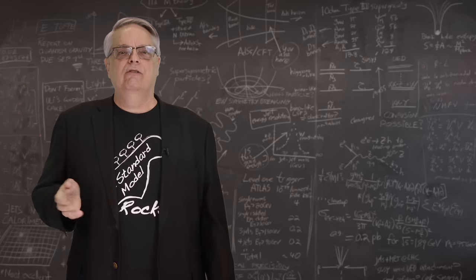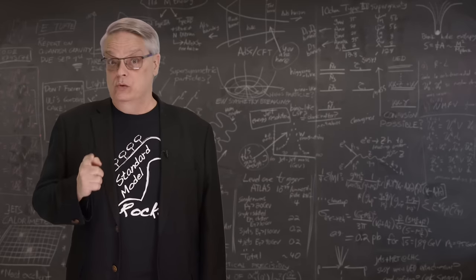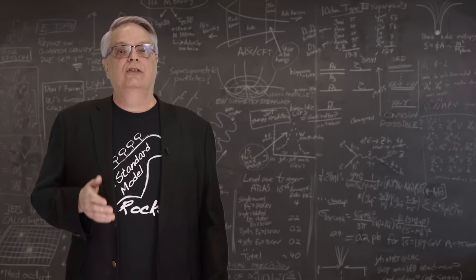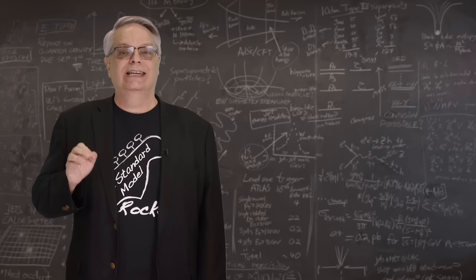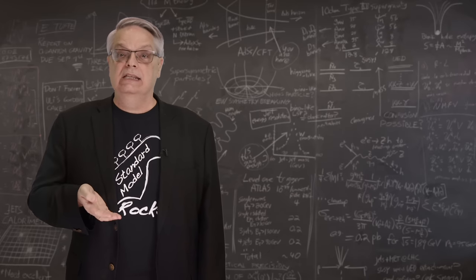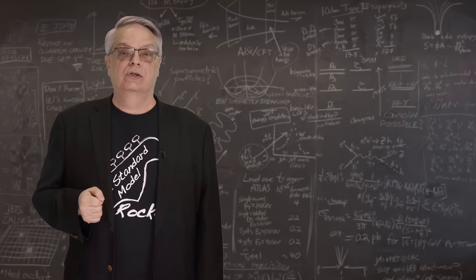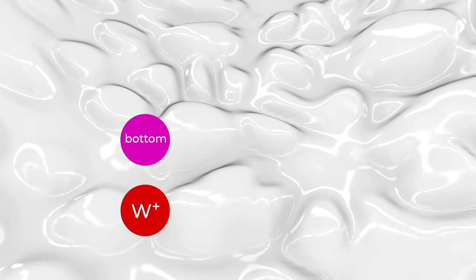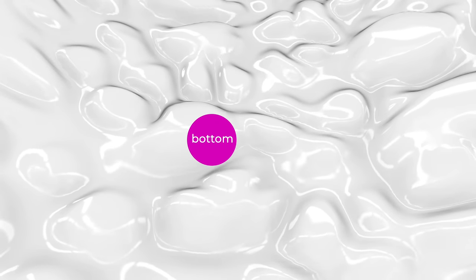Since I'm talking about the weak force, I should probably tell you something that is unique about it. It turns out that the weak force is the only one that can change a particle's identity. For example, when the top quark decays, it does so via the weak nuclear force. What happens is the top quark emits a W boson, and when it does, it turns into a bottom quark.